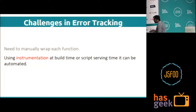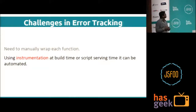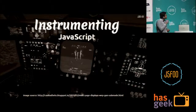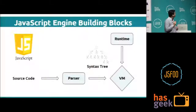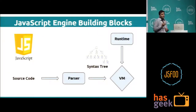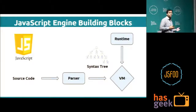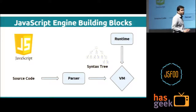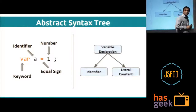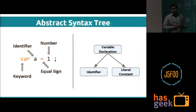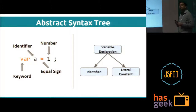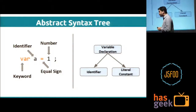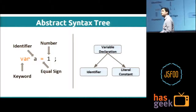To address manually wrapping each function, we can use instrumentation at script time, script serving time, or build time. This is the basic flow of how JavaScript executes: I have source code, a parser generates a syntax tree with the grammar of JavaScript, then there is a VM and runtime environment producing the output. Now there is the abstract syntax tree — for those who know about compiler design, we represent source code in the form of a tree for easy manipulation.